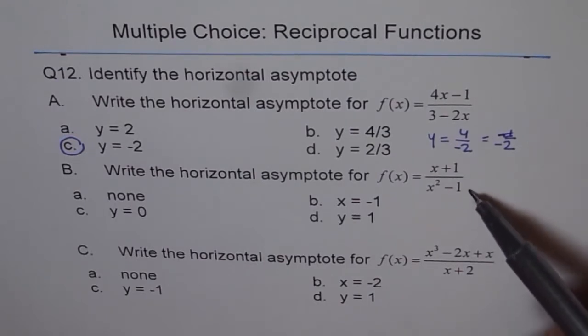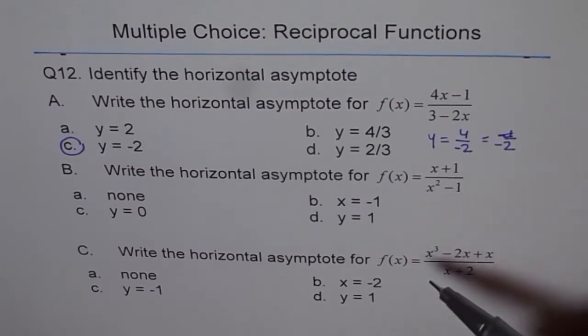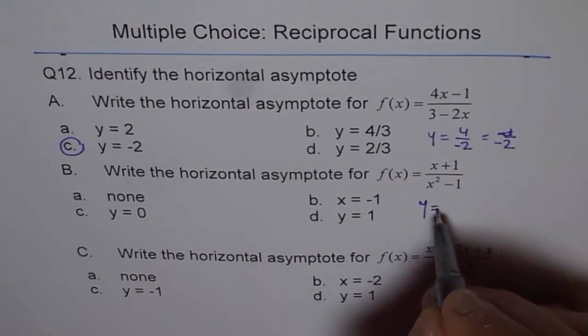That means more than the numerator, so therefore the horizontal asymptote will be y equals 0. That's the choice.